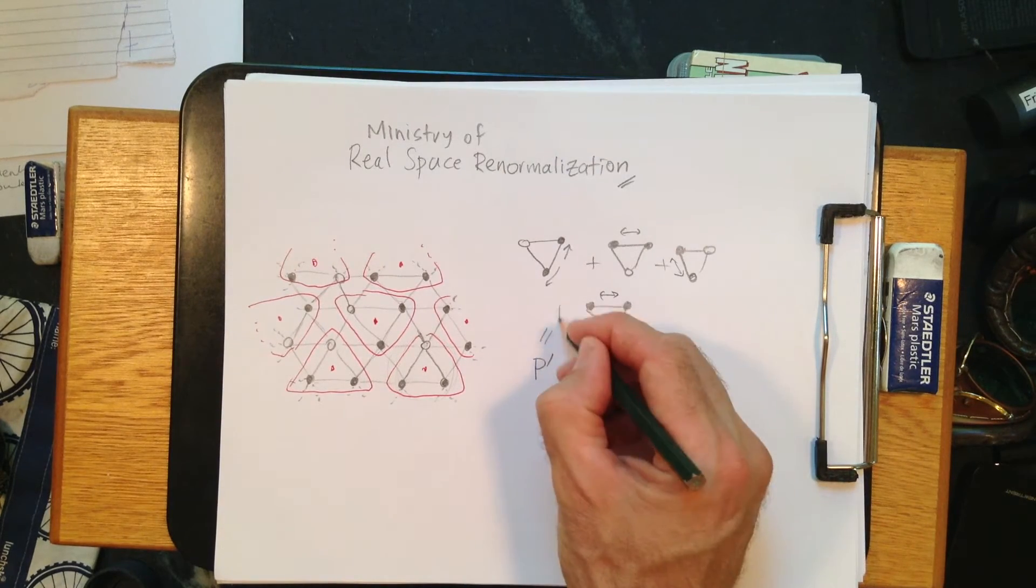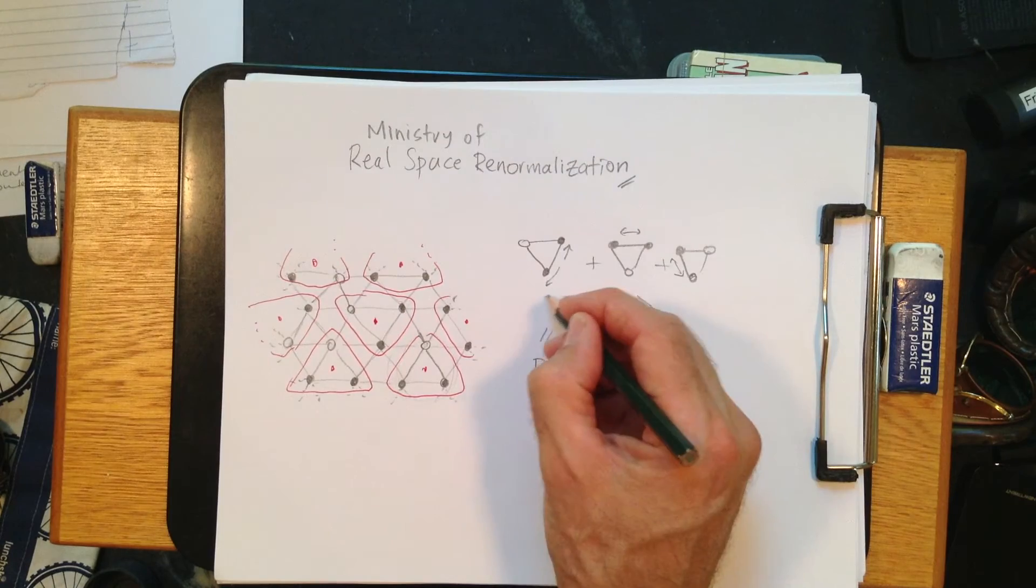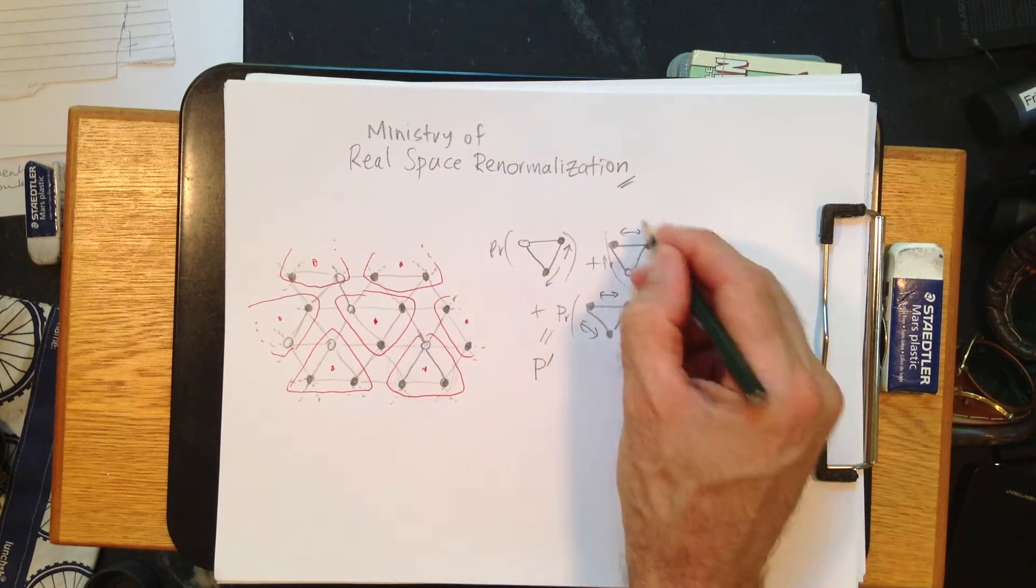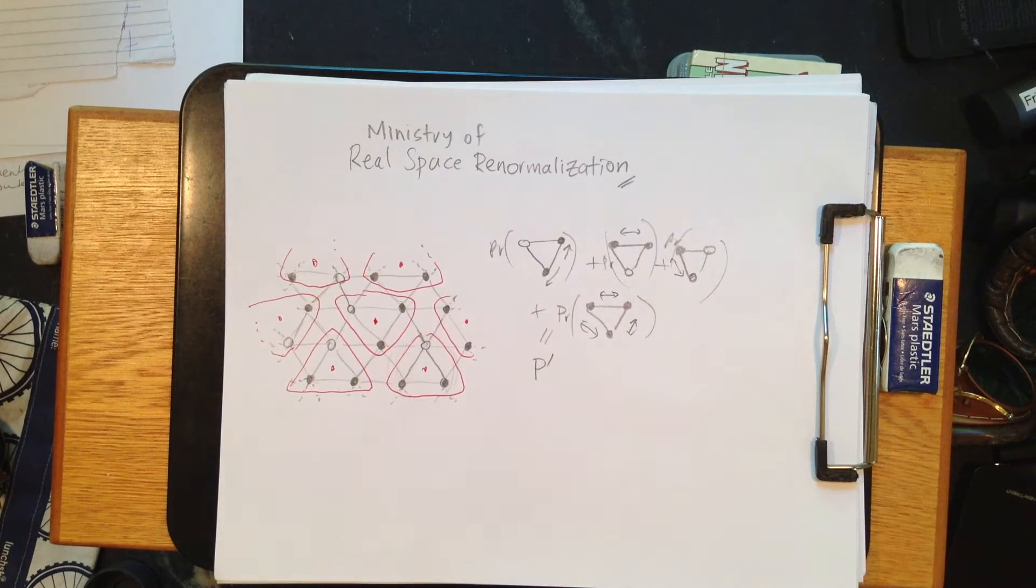Okay, so we'll do it like this. So it's the probability of this one, plus the probability of this guy, plus the probability of this guy, plus the probability of this guy. Alright, so there's a little bit of math action there, right?